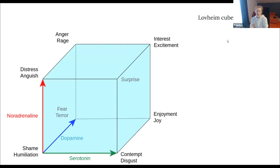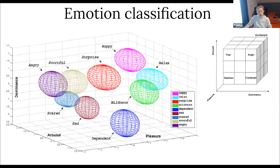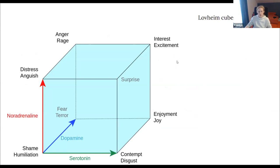One more interesting scheme connected to emotions is the Lövheim Cube of Emotions, which has three axes named after neuromediators: a serotonin axis, a dopamine axis, and a noradrenaline axis. This model is quite similar to the dimensional models, but Lövheim does not claim a strong connection between, for example, serotonin and pleasant/unpleasant, noradrenaline and arousal, and dominance and dopamine.